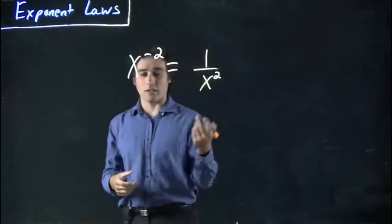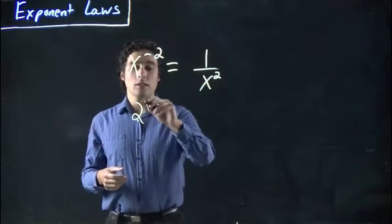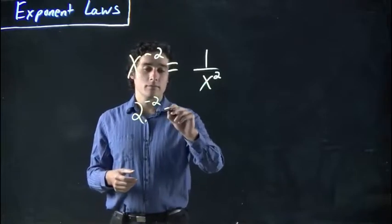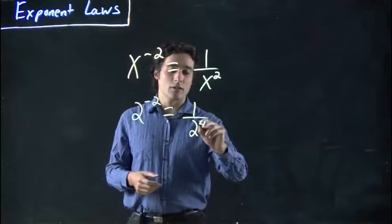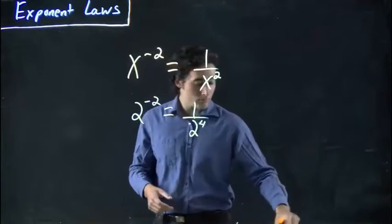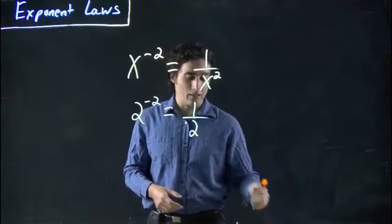In fact, if you check in your calculator with quick numbers, if you do something like 2 to the negative 2, you punch that in your calculator and then compare it to 1 over 2 to the 2. Remember, you flip it and make the exponent positive.